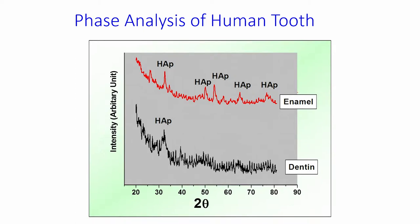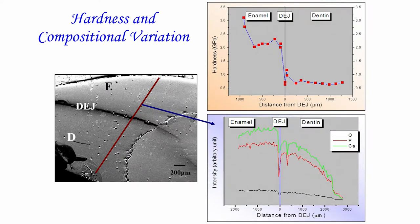If you take separate parts of enamel and dentine and perform X-ray diffraction, you see a very clear indication of the hydroxyapatite phase, which is crystalline in nature. We have done careful and systematic analysis by taking Vickers indentations at different distances across the section from enamel to the dentine enamel junction to dentine.